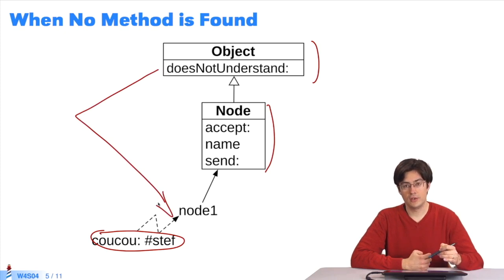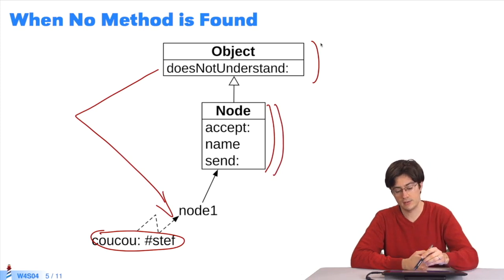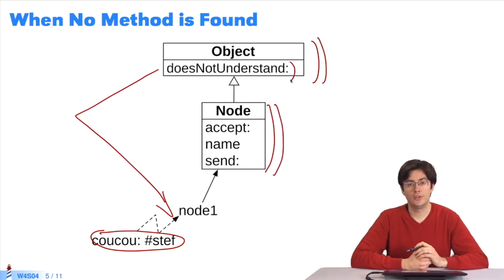so the message doesNotUnderstand is resent to object Node1. The algorithm looks up the method doesNotUnderstand in Node1's class. Not finding a match there, the algorithm searches the superclass. It is located there.